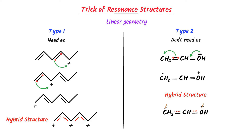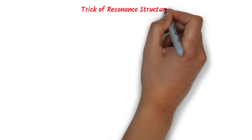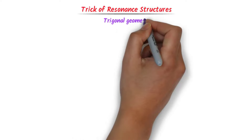Thus, using these two tricks, we can easily draw resonance structures of molecules having linear geometry. Now I will teach you a trick of drawing resonance structures of molecules having trigonal geometry.